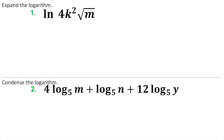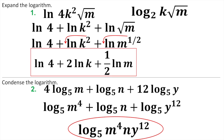Expand the first one, condense the second one — just giving you more practice. Check your answers. There's a lot to this one. First thing I would do is separate all of these: this is ln four, plus ln k squared, plus ln of the square root of m. Then convert the square root to a fractional exponent, move it out in front, and you're done. When condensing, the very first thing is to move coefficients into the exponent — the four comes over to m, this one stays, and the twelve comes over to y. Then since they're all additions, just combine them.